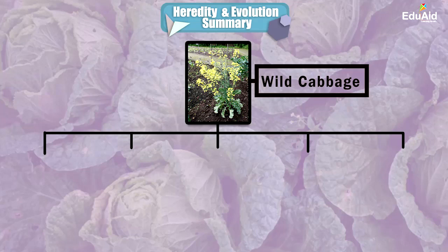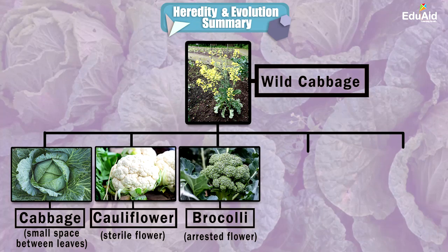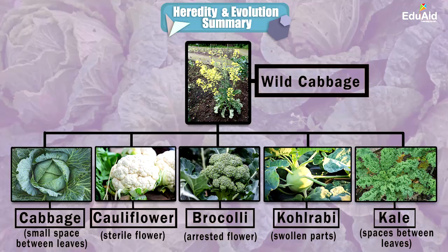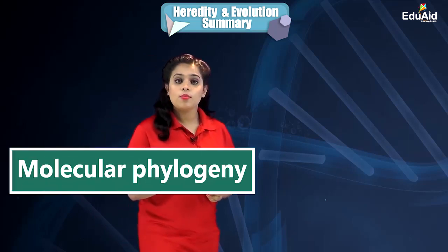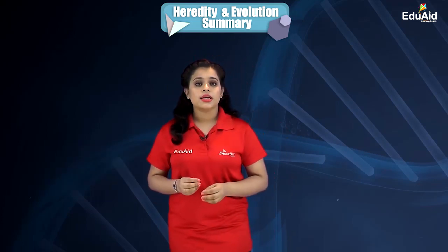We then learned how evolution takes place by stages. Using the example of wild cabbage, we saw how human beings through artificial selection have cultivated different breeds of food plants for their own convenience. To analyze hereditary molecular differences and gain information on evolutionary relationships, we can use molecular phylogeny.